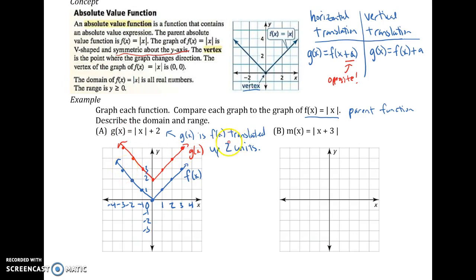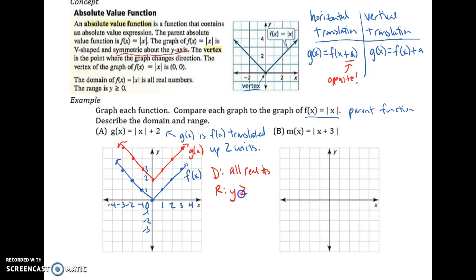Well, my domain is still going to go all over that x-axis. So my domain is still all real numbers. And then my range now has moved up from 0. So my smallest value, my lowest, my minimum, is at 2. So it's going to be y is greater than or equal to 2.